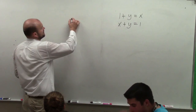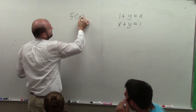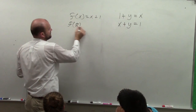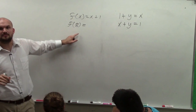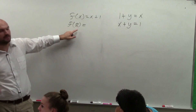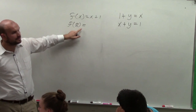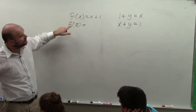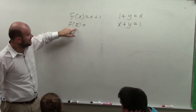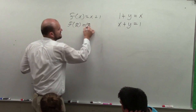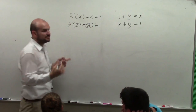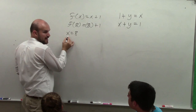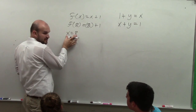Now, remember if I had f of x equals x plus one and I said find the value of f of eight — we plugged eight in for x. The reason we could do that is x was equal to eight, or eight was equal to x. We could substitute one value for the other value.